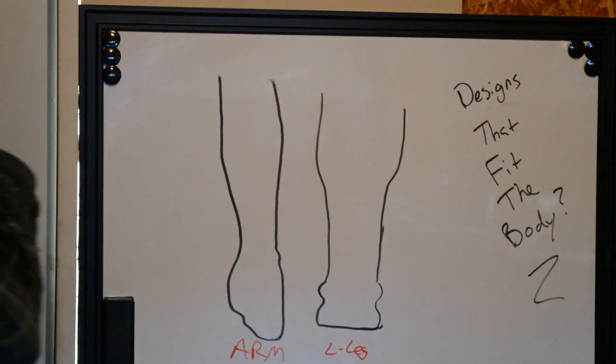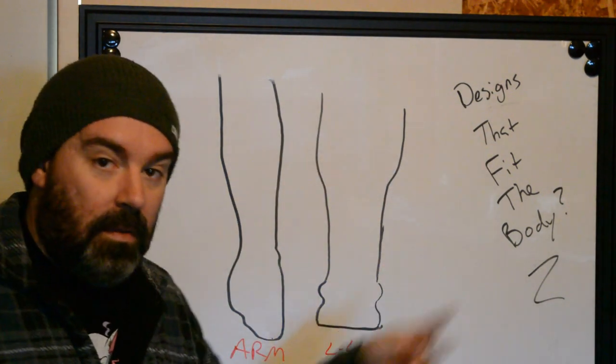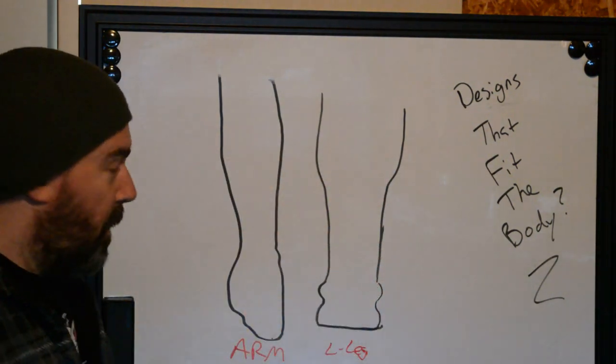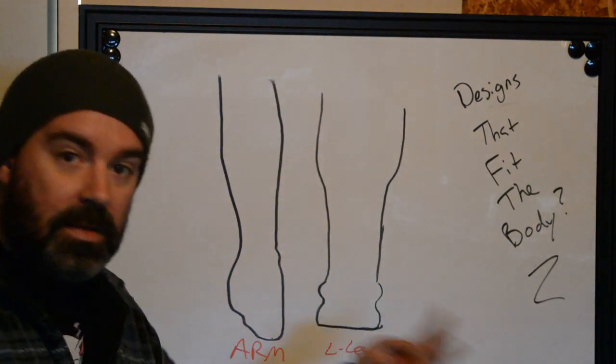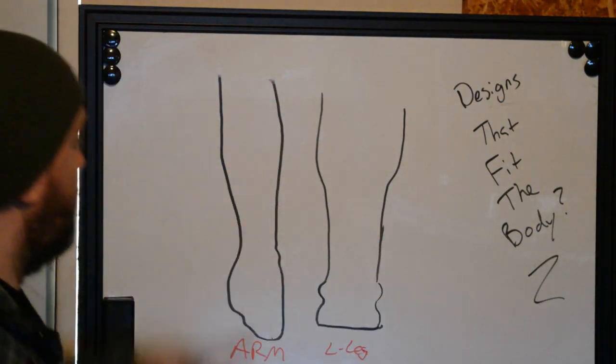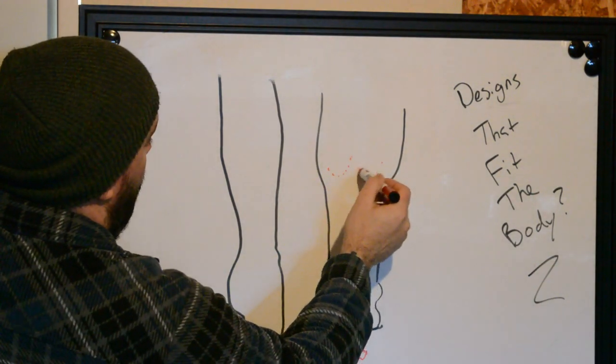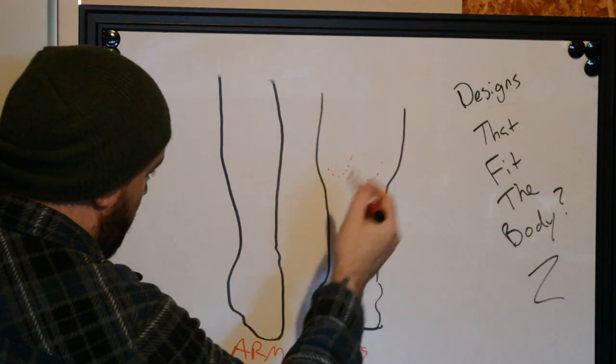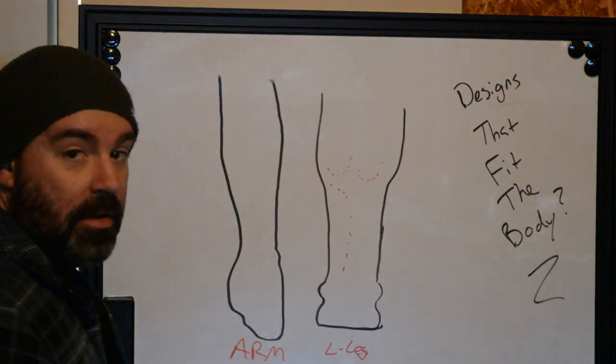So when we're thinking about designs that fit the body, we're trying to think of stuff that takes into account not only the skin that's there, but also the structures that are underneath the skin that influence that skin on top. Every time you take a step, the muscles in the back of your leg are going to bend and move, contract, extend, all that stuff, and that's going to influence how that design is actually set on your body.